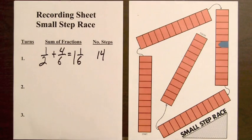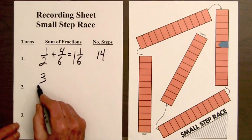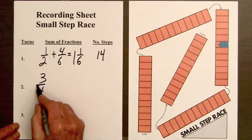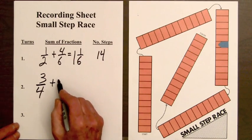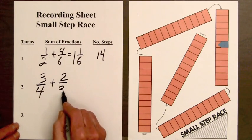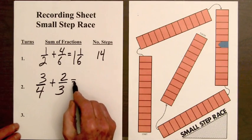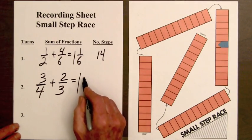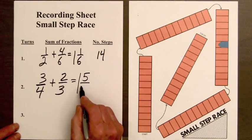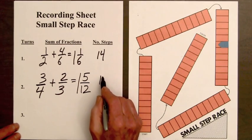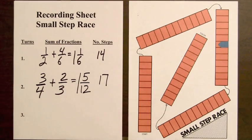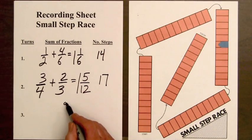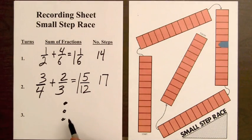Now for turn number two, we had three-fourths plus two-thirds. And this was seventeen steps, which is one whole and five-twelfths. Seventeen steps. And in this manner, students can continue to write the sums of the mixed numbers for each of the bars they select.